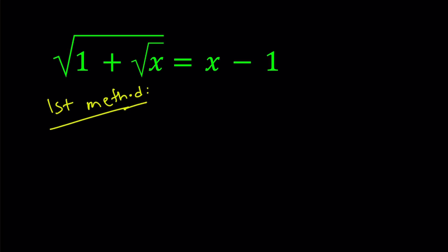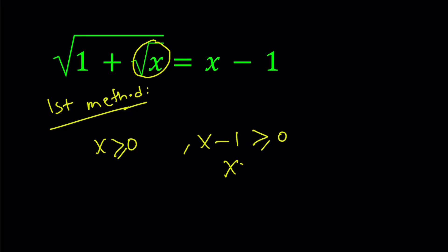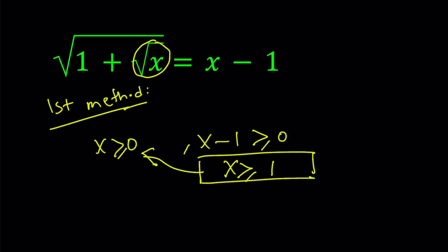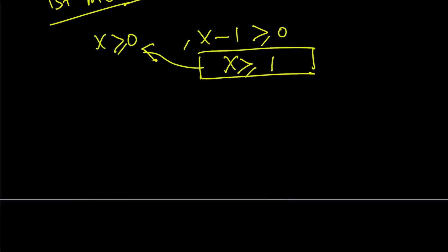The first method basically involves substitution. But before I do that, I want to check the domain. Notice that we have a square root of x, so x must be positive. And we have a radical equals x minus 1, so x minus 1 must be greater than or equal to 0. That implies x is greater or equal to 1, which automatically implies x is greater or equal to 0. So I just need x to be greater than or equal to 1. Let's remember that as we solve this problem.